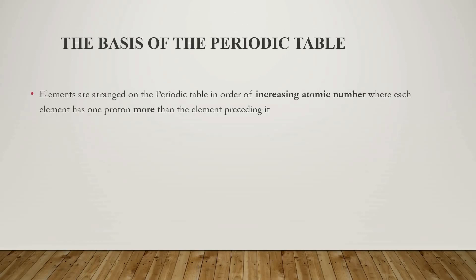Now, the basis of the periodic table — there are some main important points we should be aware of. If you observe the periodic table, you will notice that elements are arranged in order of increasing atomic number, where each element has one proton more than the element preceding it. For example, hydrogen has one proton, helium has two protons, lithium has three, and so on.